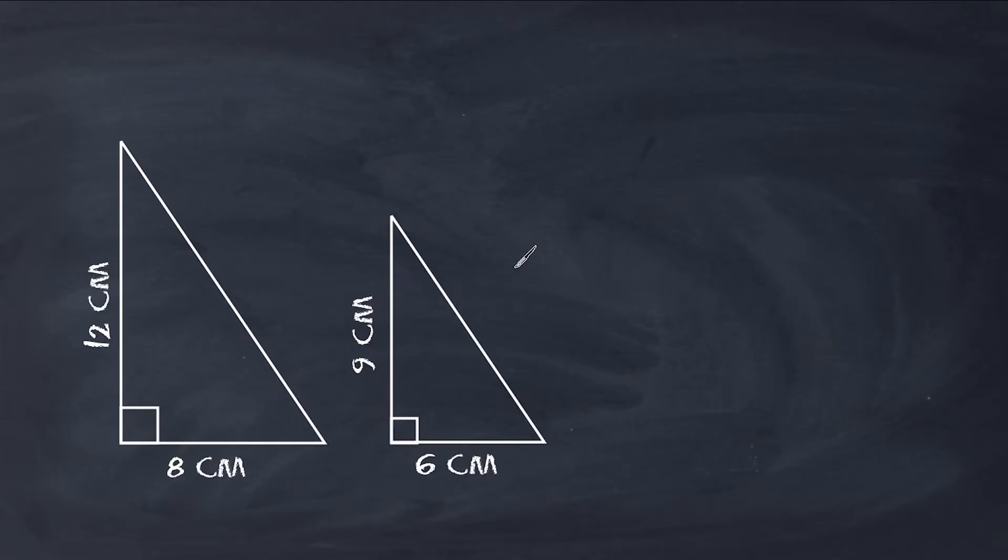There are a few ways to determine whether or not a pair of shapes are similar to each other. One strategy is by comparing all of their corresponding sides. For example, let's compare the height of this triangle to the height of this triangle.